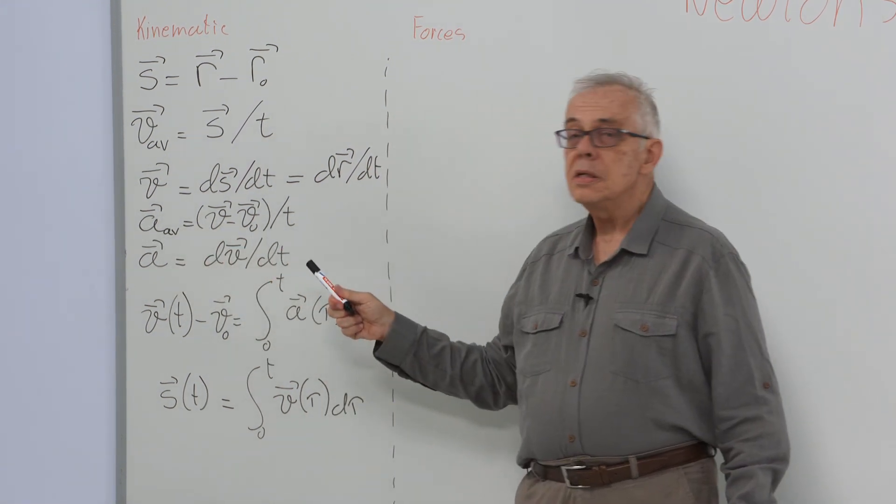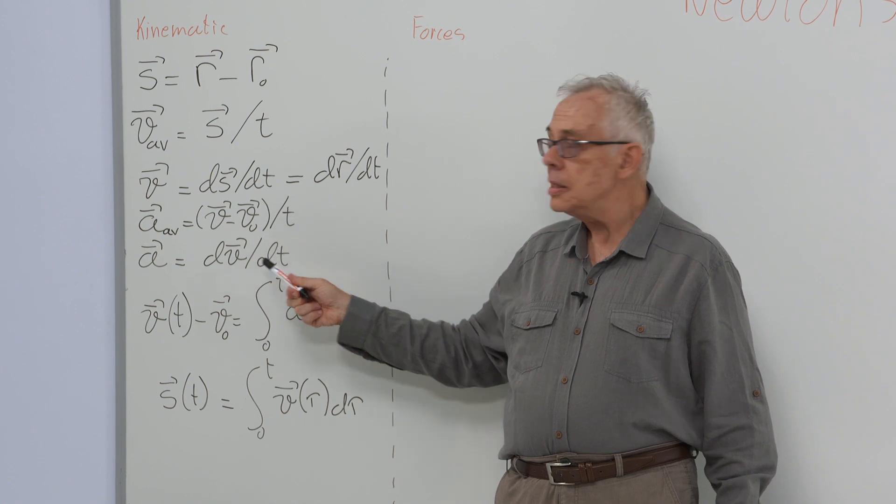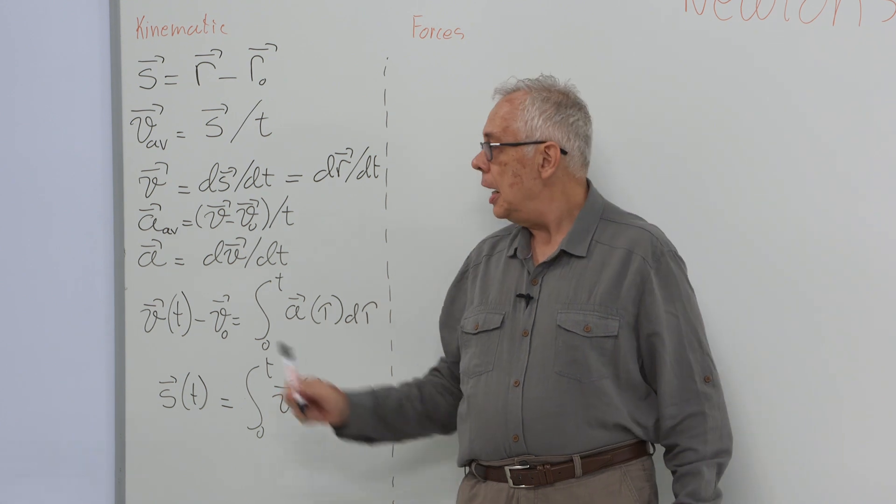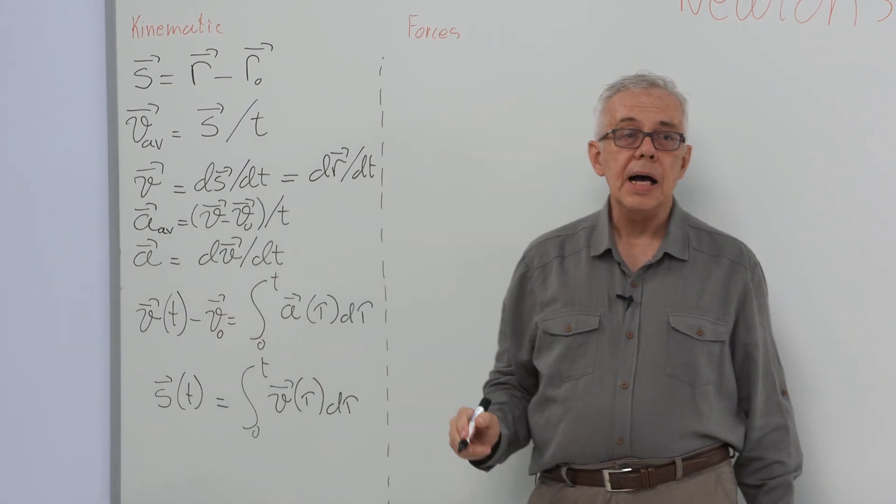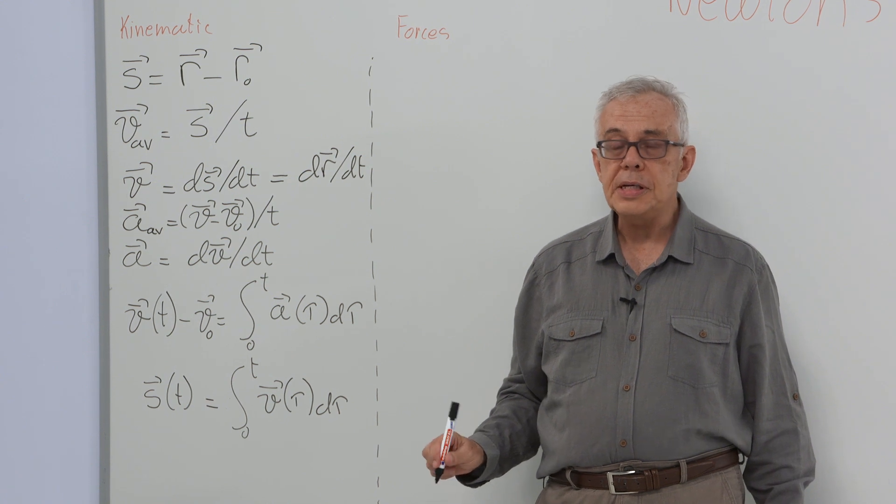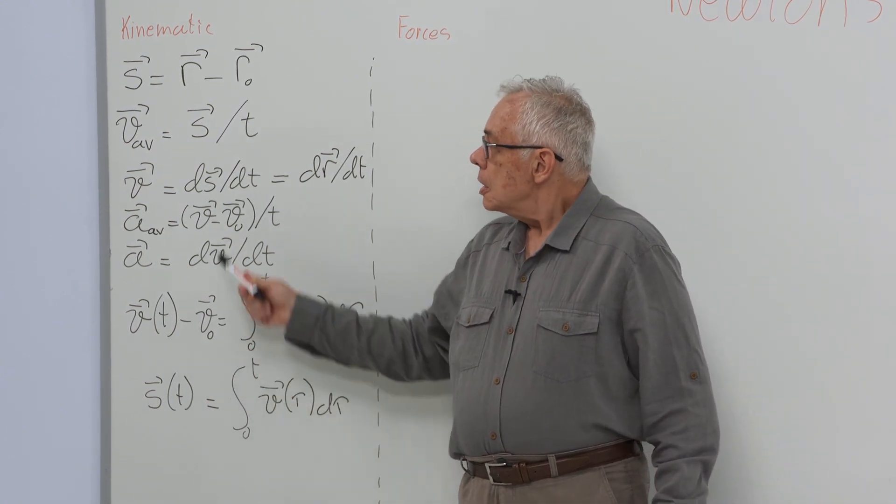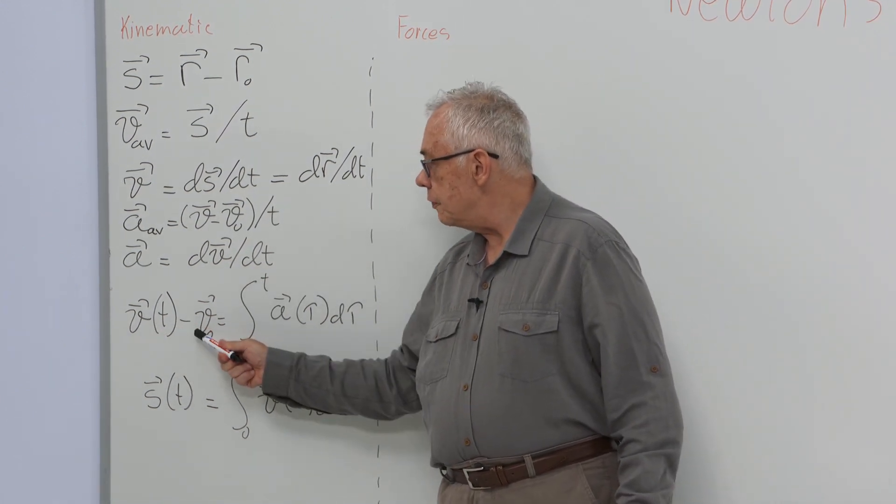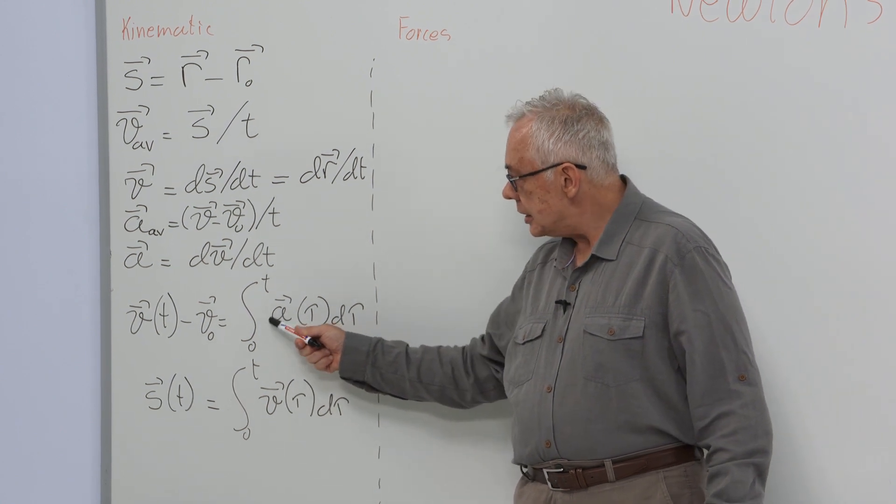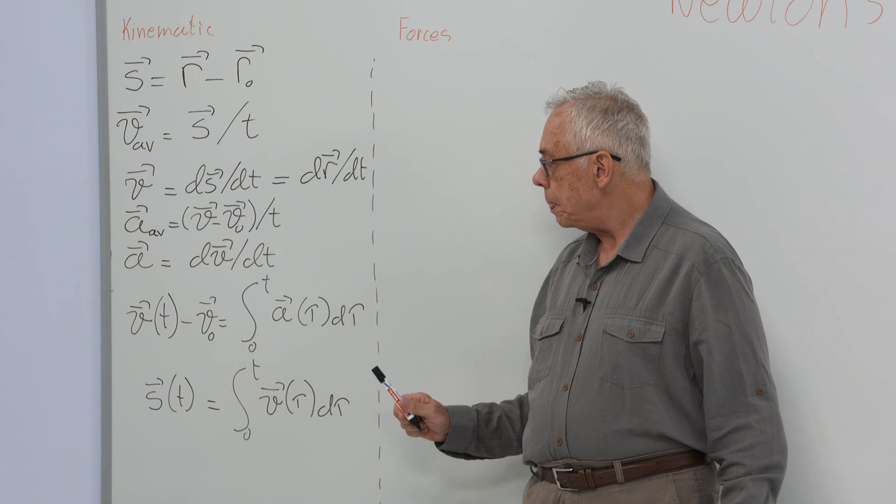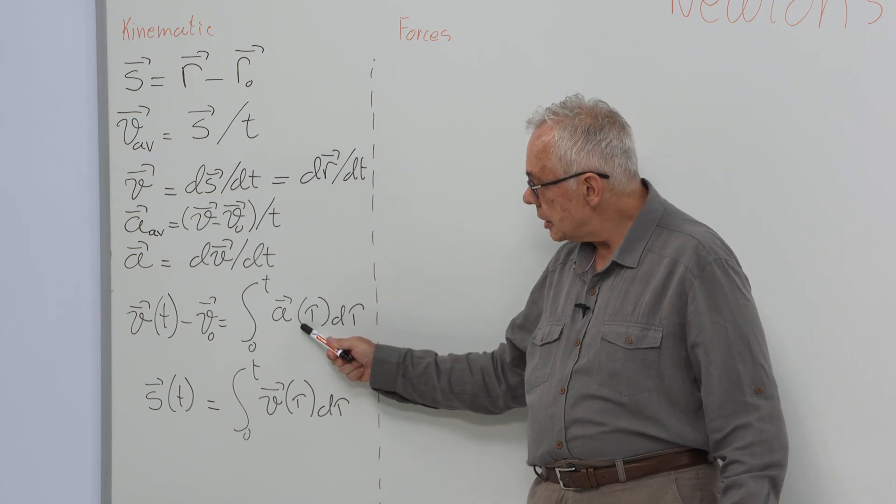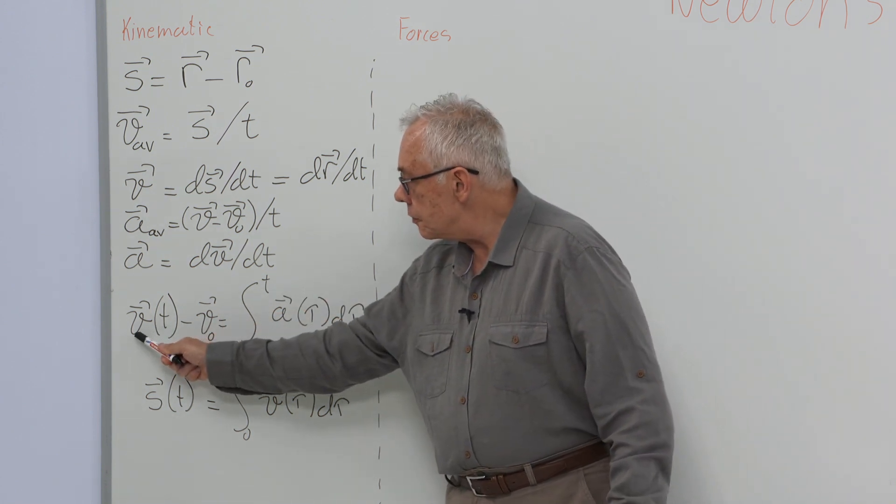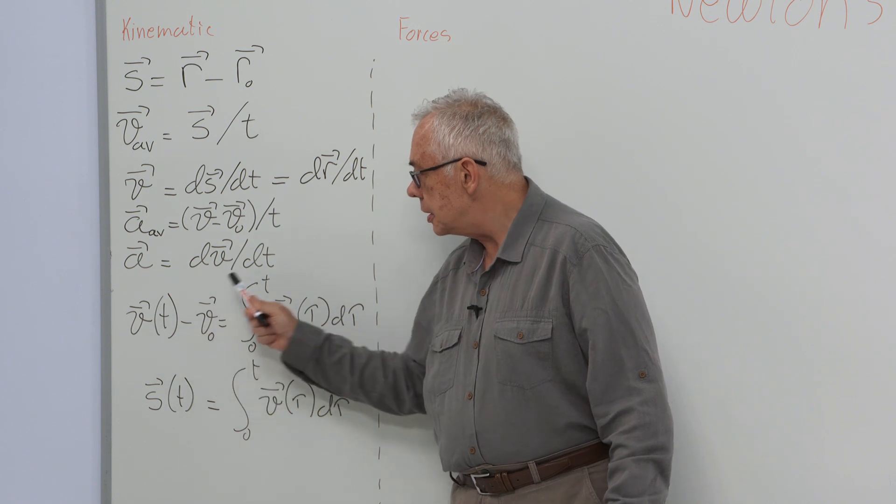Average acceleration, we defined as change in velocity divided by the time it took for the change to take place. And instantaneous acceleration as the derivative of velocity with respect to time. These formulas can be inverted. The change in velocity is the integral of acceleration over time. Please note that the integral variable and integral limit are not the same, and velocity is a function of the integral limit.